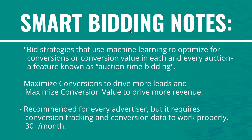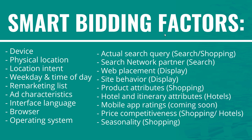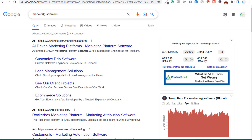One reason to use smart bidding over manual bidding is machine learning at auction time. When someone makes a search, Google Ads looks at their device, physical location, location intent, weekday, time of day, whether they're on a remarketing list, characteristics of the ad, interface language, browser, operating system, and many other factors — some campaign-specific. All these signals are used at the moment someone enters the ad auction to serve the most likely converting ads.